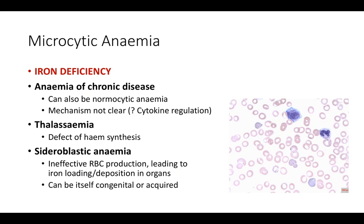Microcytic anemia: iron deficiency is the most common cause. Anemia of chronic disease can be microcytic but is most commonly normocytic. Thalassemia and sideroblastic anemia are also causes. Sideroblastic anemia is often due to ineffective red blood cell production, which can be congenital or acquired. The image shows basophilic stippling — a speckled appearance particularly in the center of the blood cells — which is pathognomonic of sideroblastic anemia in your exams.